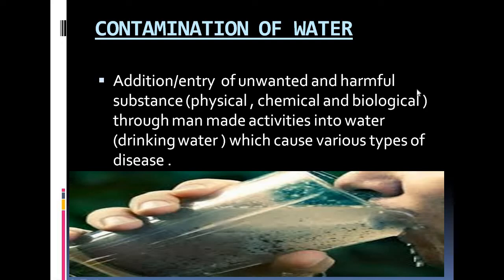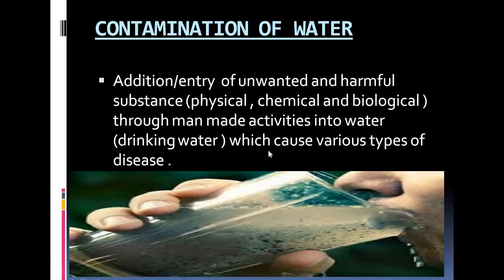These substances may be physical, chemical, or biological substances. We will see one by one how each type is added to water. This addition is done directly or indirectly through man-made activities. We are mainly concerned with drinking water. The complete definition: contamination of water is the addition or entry of unwanted and harmful substances through man-made activities into water, which causes various types of diseases.